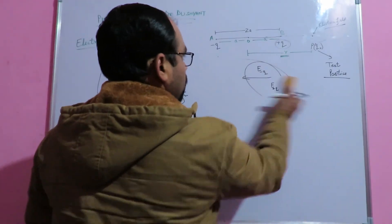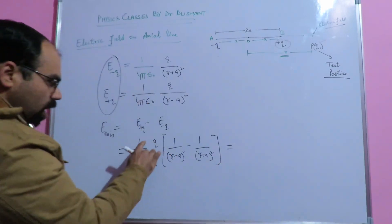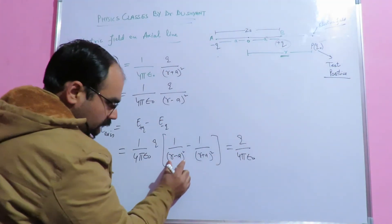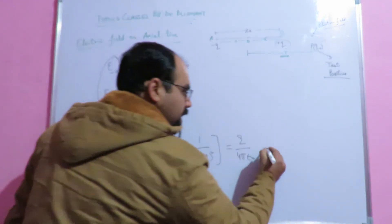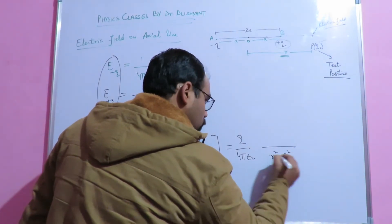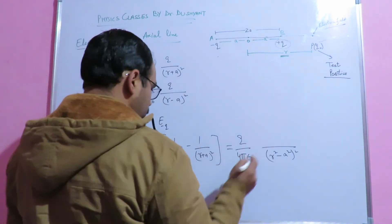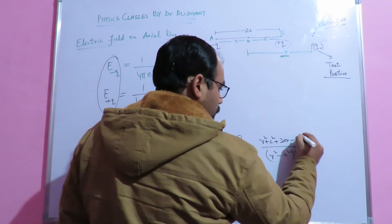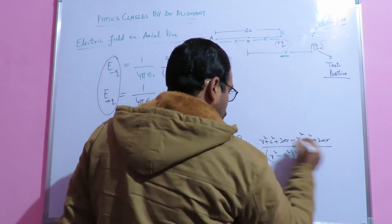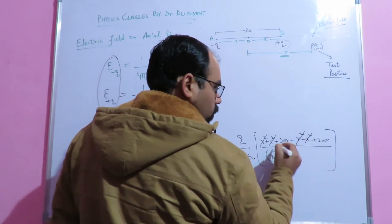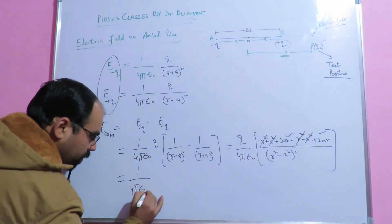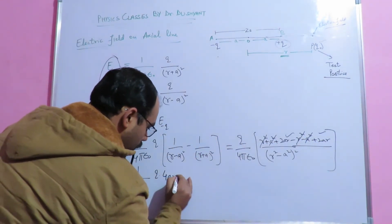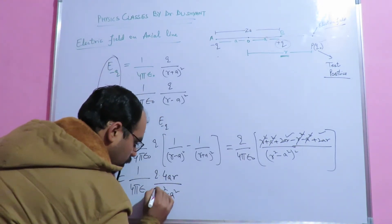Both terms share the factor (1/4πε₀)Q, so E_axial = (1/4πε₀) × Q × [1/(R−a)² − 1/(R+a)²]. Taking the difference of these fractions, the numerator becomes (R+a)² − (R−a)² = 4aR, and the denominator is (R²−a²)². This gives E_axial = (1/4πε₀) × Q × 4aR / (R²−a²)².